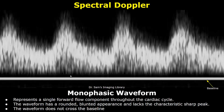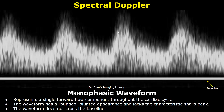Usually whenever a waveform is seen above the baseline it is considered forward flow, and when the waveform is seen below the baseline it is called flow reversal. This is a monophasic waveform, which means it only has one component — a single forward flow component throughout the cardiac cycle. A monophasic waveform will not have a sharp peak; instead we will find a blunt peak and a broad waveform, and the waveform will not cross the baseline.